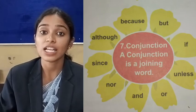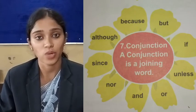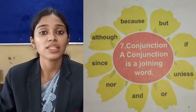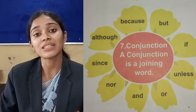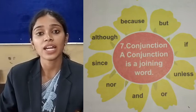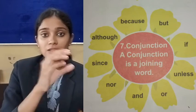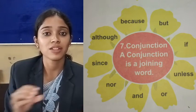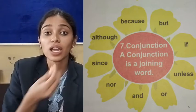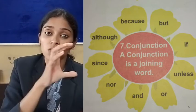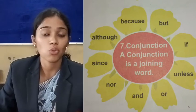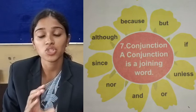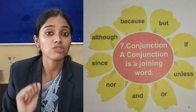So what is conjunction? A conjunction is a joining word. As you can see the definition in the flower, a conjunction is a joining word. So the thing is, whichever word is a joining word, it is known as conjunction.